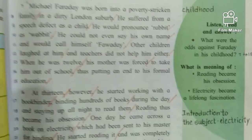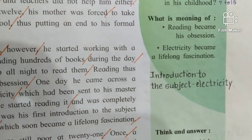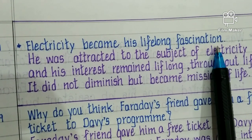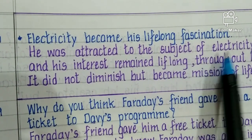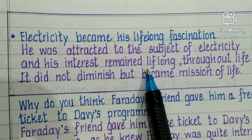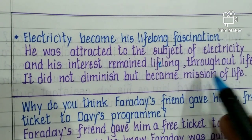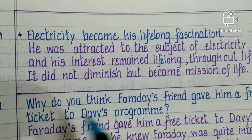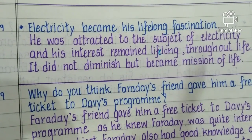The next question is: what does the sentence 'electricity became a lifelong fascination' mean? Electricity became his long-life fascination means he was attracted to the subject of electricity. 'Fascination' means you get attracted to something. His interest remained lifelong — throughout his life — and it did not diminish. It became the mission of his life.